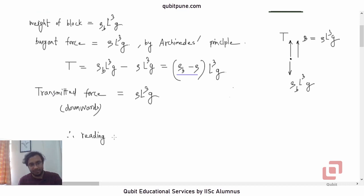Therefore, the reading on the machine will be weight of the liquid plus ρL³g. See, remember or try to understand how we have argued here.